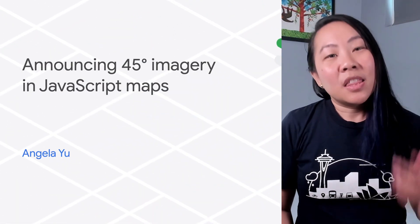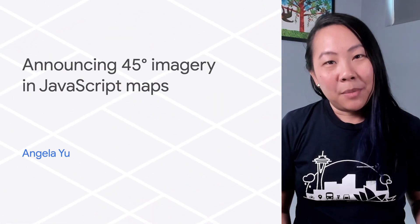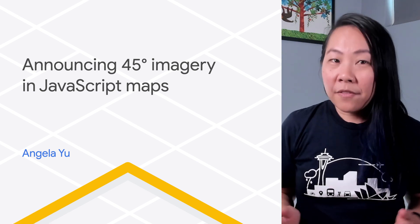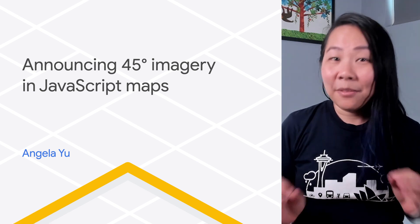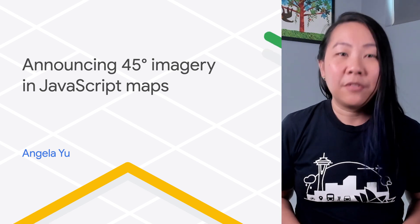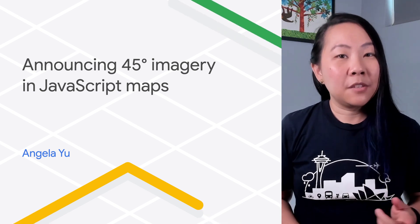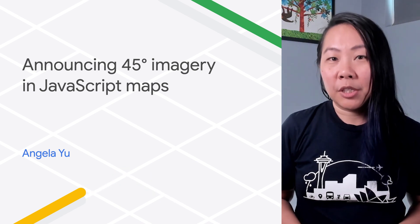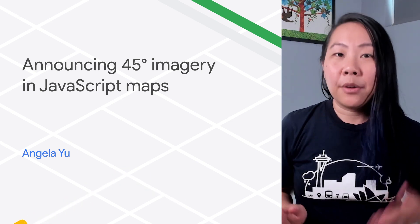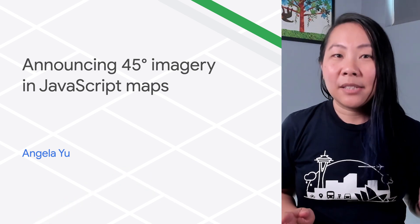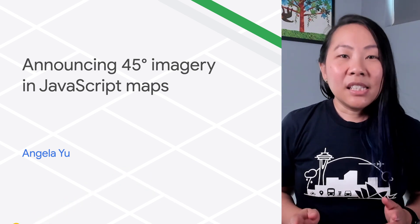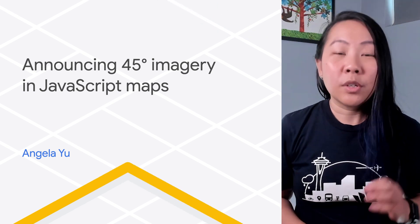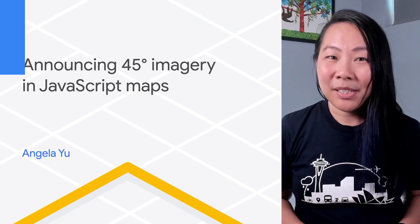Here's the deal. The Maps JavaScript API supports special 45-degree high-resolution imagery for certain locations with perspective views toward each of the cardinal directions — north, south, east, and west. These images are available at higher zoom levels for supported map types.